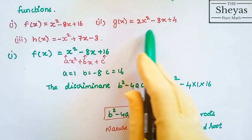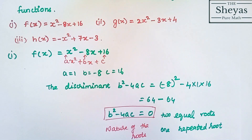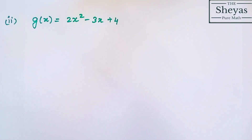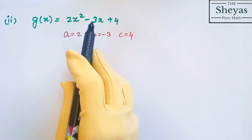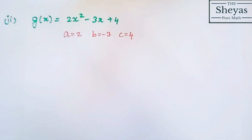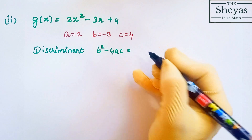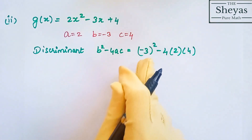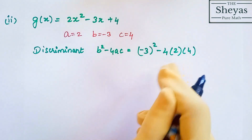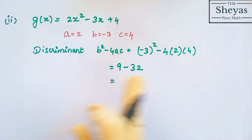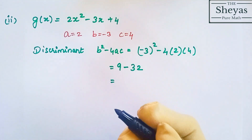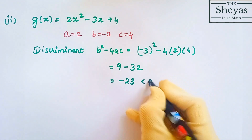The second problem: g of x is equal to 2x squared minus 3x plus 4. Here a is equal to 2, b is equal to minus 3, and c is equal to 4. The discriminant b squared minus 4ac equals minus 3 the whole square minus 4 into 2 into 4, which is 9 minus 32, equal to minus 23, which is less than 0.